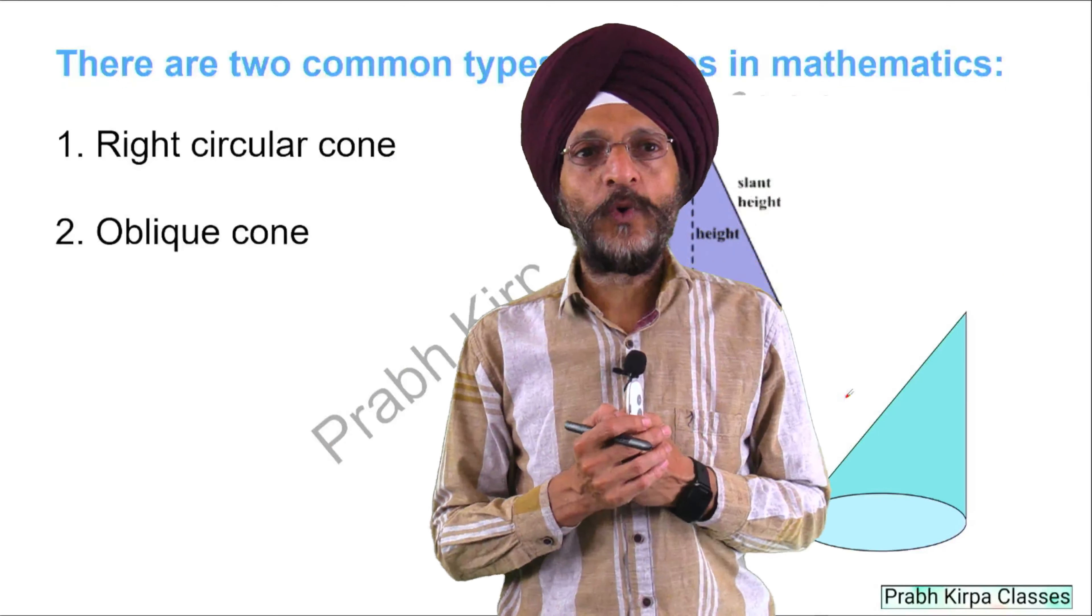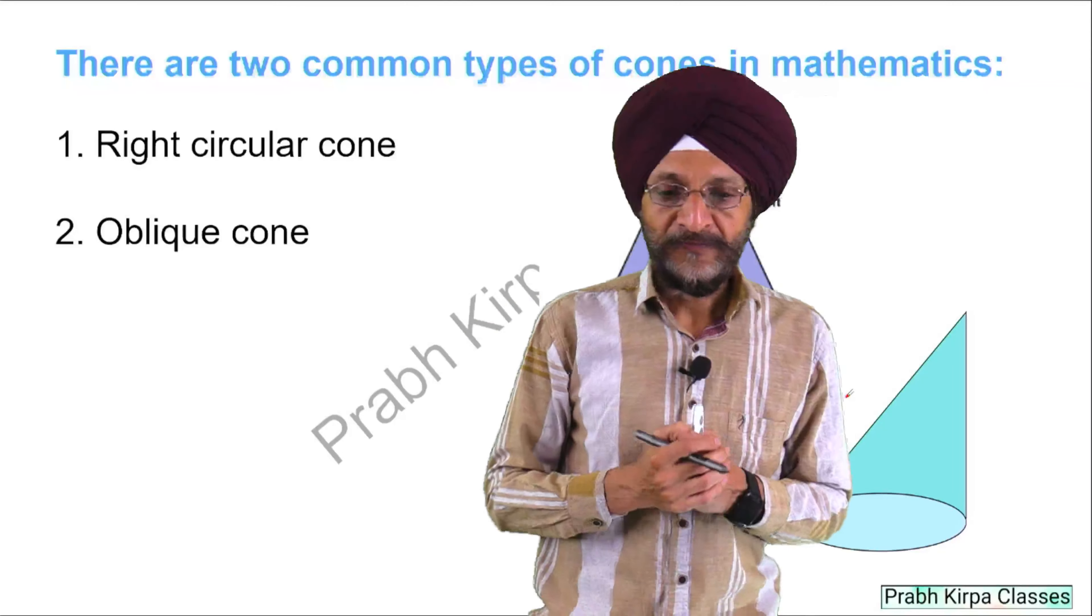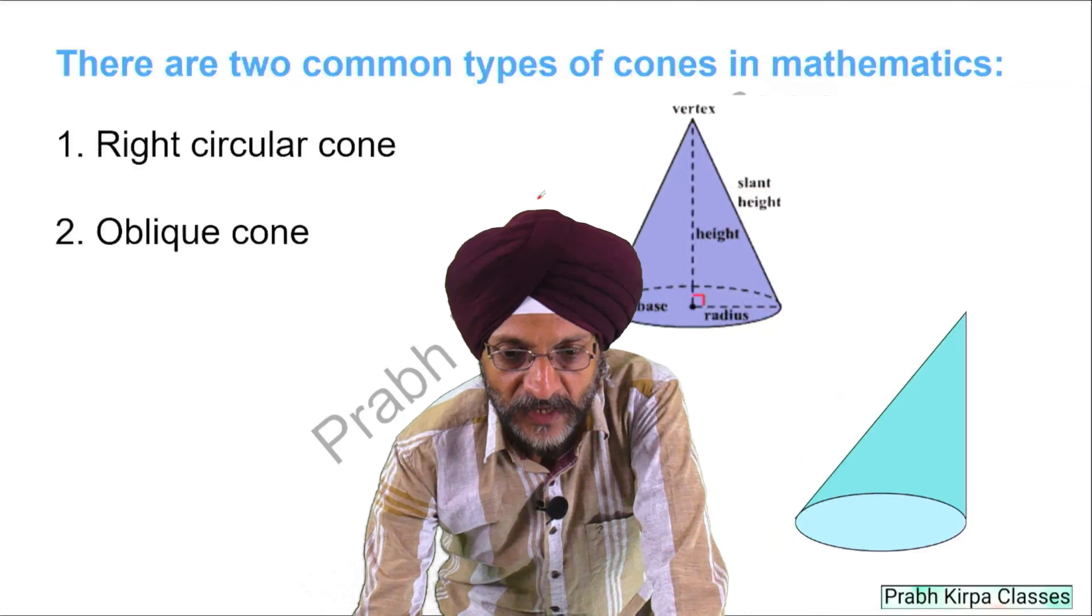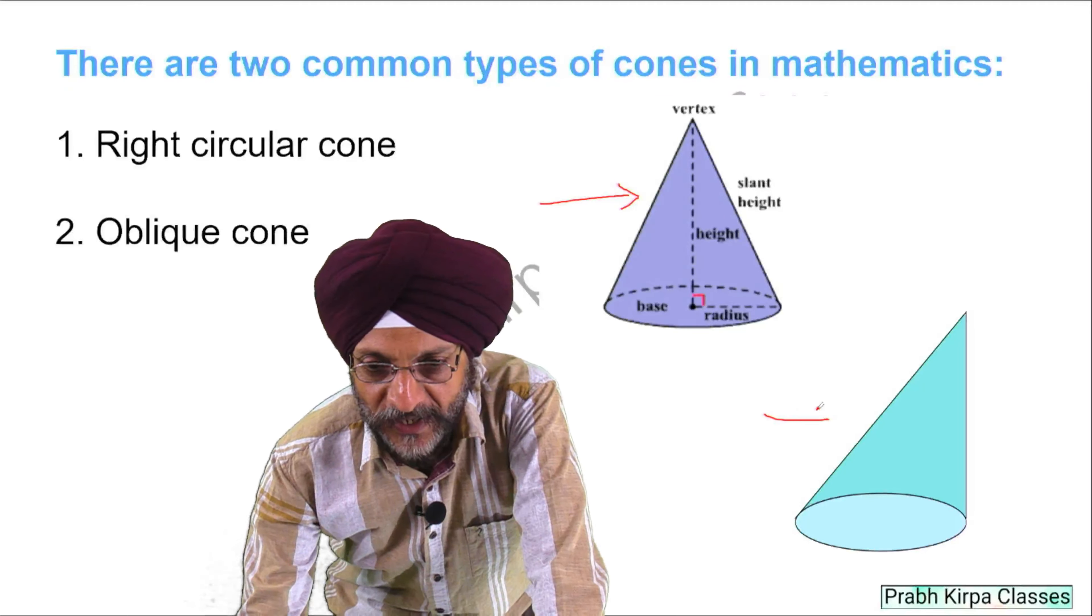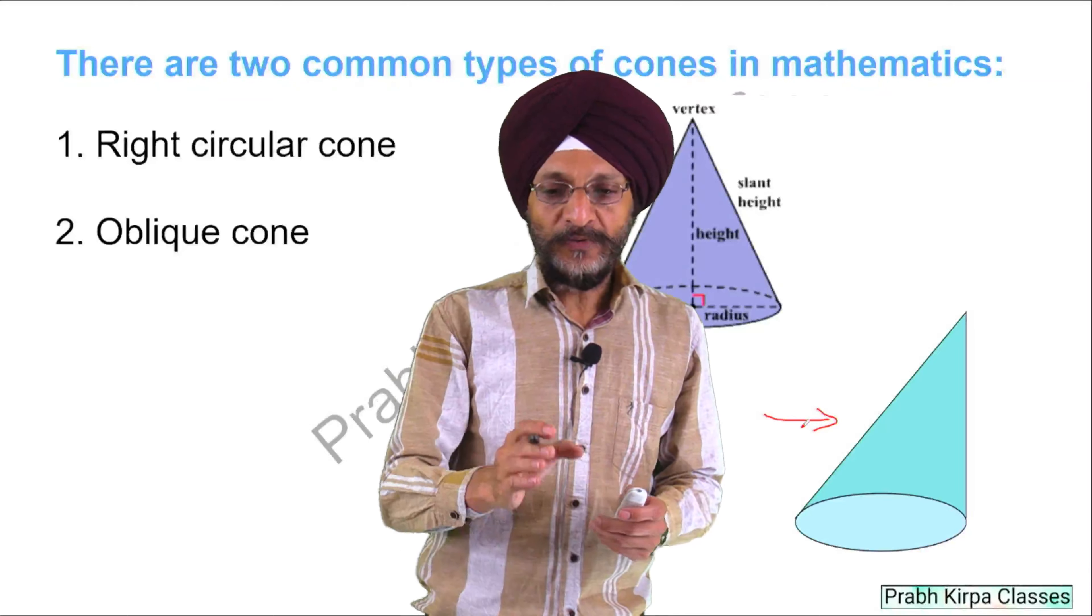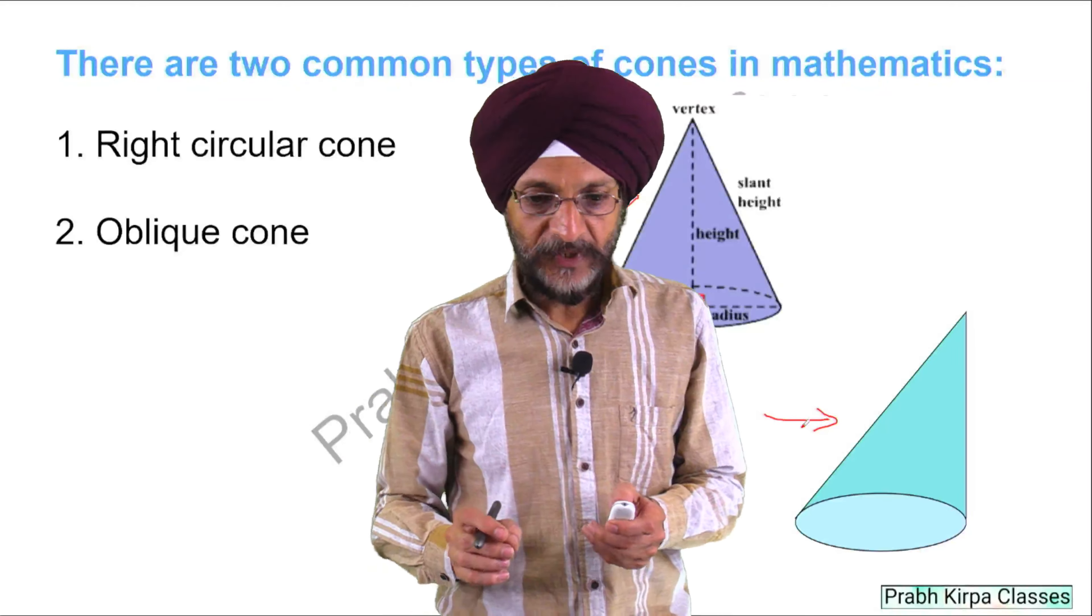There are two common types of cones in mathematics. First is right circular cone and the second is oblique cone. Now we will discuss each of these cones in some detail.